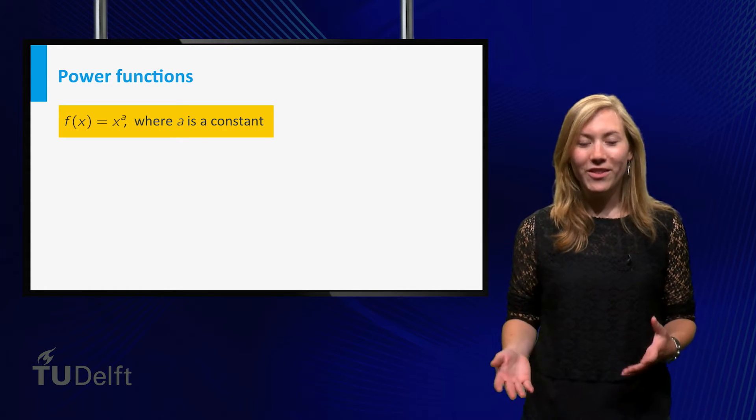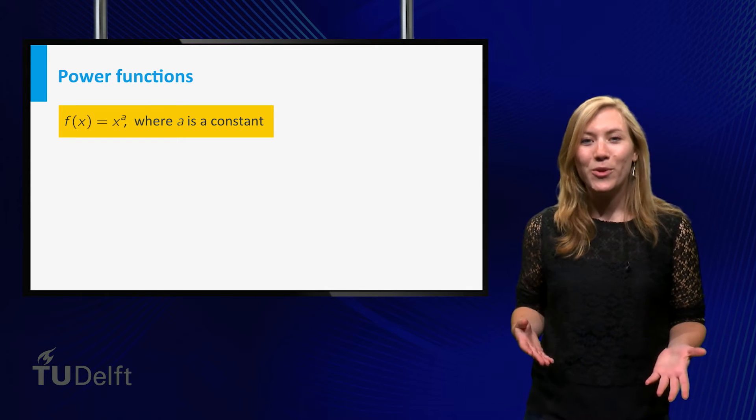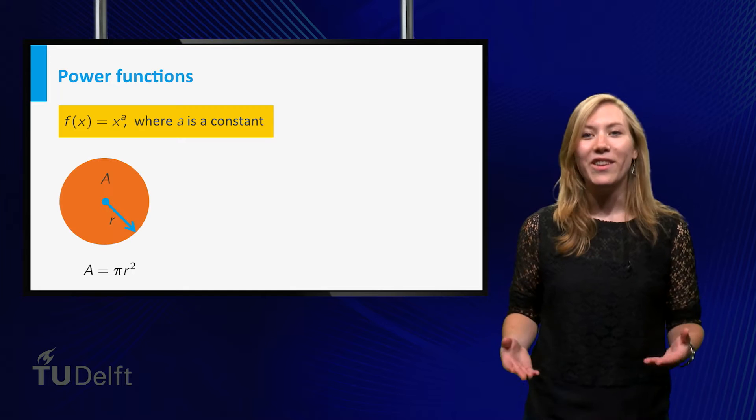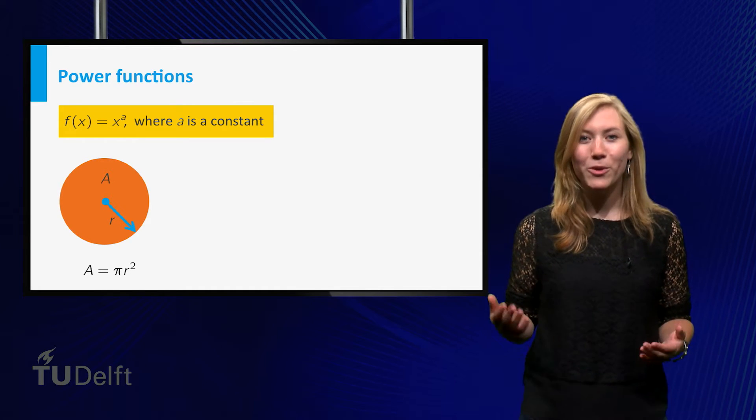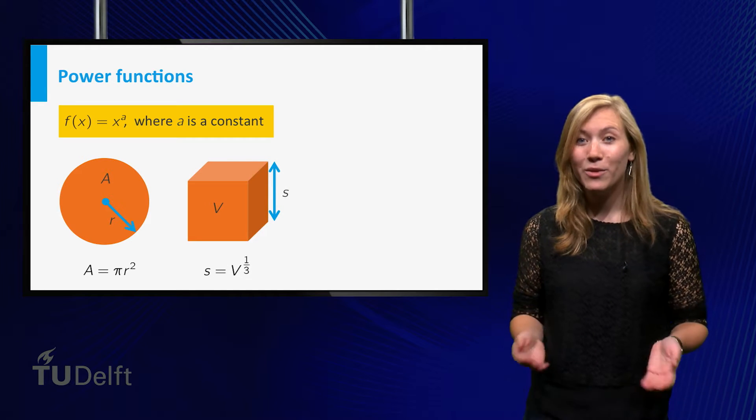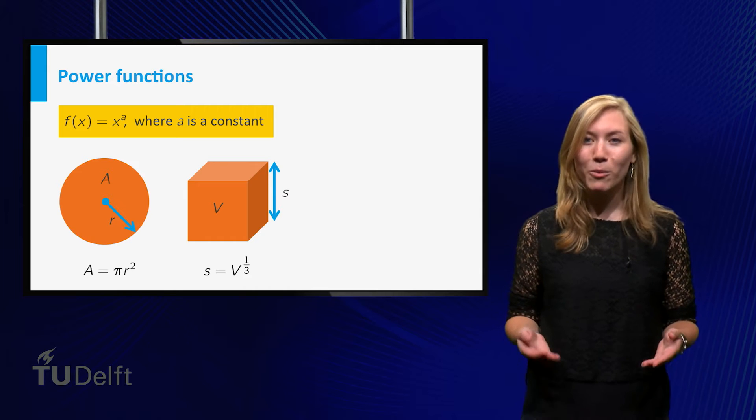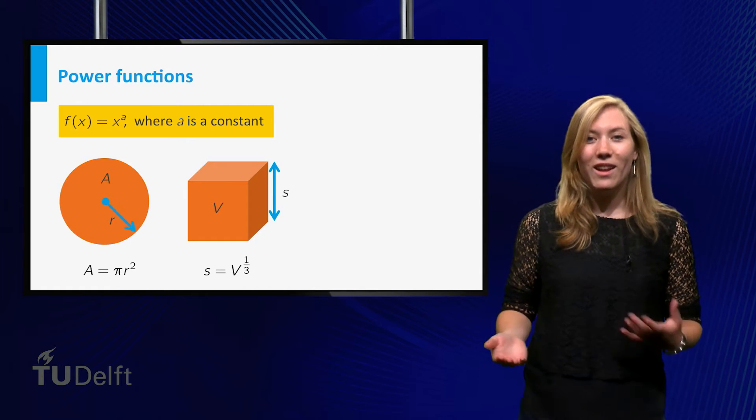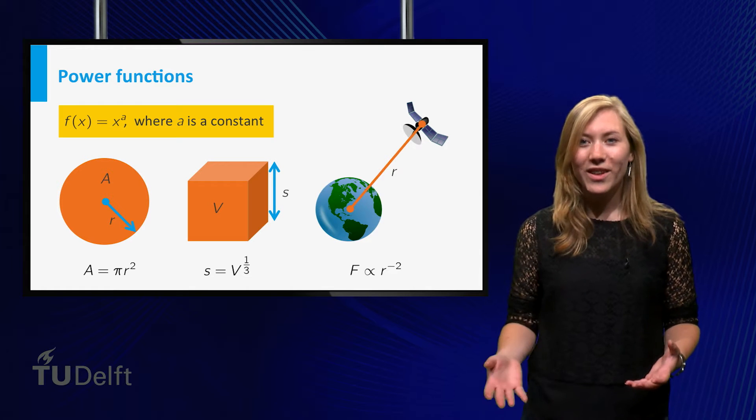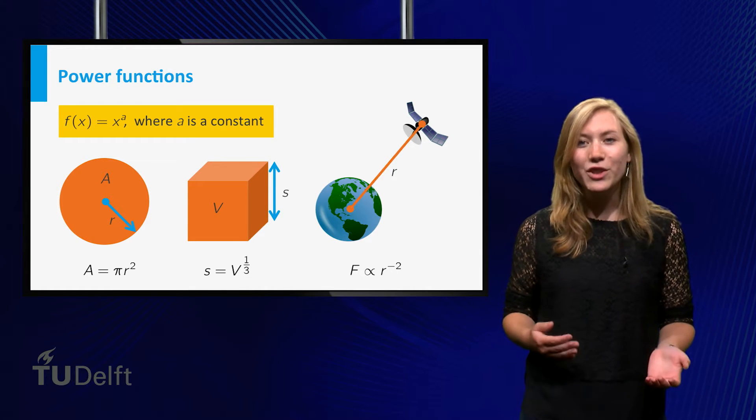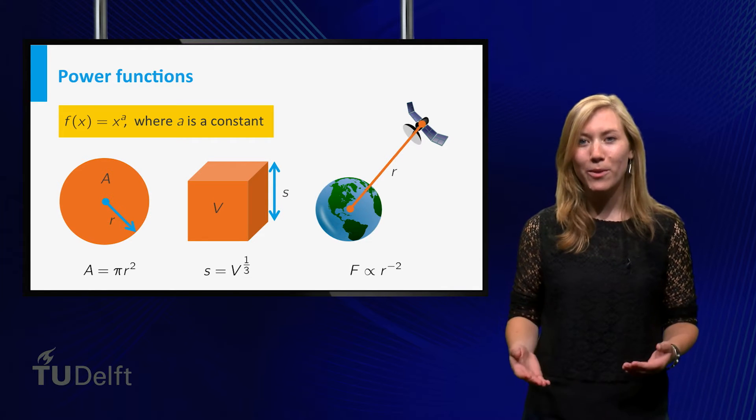They occur at many places in and outside mathematics. A few examples. The area of a disk of radius r is given by pi times r to the power 2. If you know the volume v of a cube, the size of an edge is given by v to the power 1 third. A last example. If a satellite has distance r to the center of the earth, then the gravitational force on the satellite is proportional to r to the power minus 2.